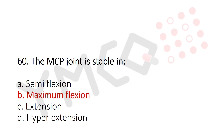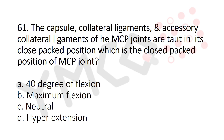Question 61: The capsule, collateral ligaments, and accessory collateral ligaments of the MCP joint are taut in its closed-pack position. The closed-pack position of the MCP joint is — Option A: 40 degrees of flexion, Option B: maximum flexion, Option C: neutral, Option D: hyperextension. The answer is Option B, maximum flexion.